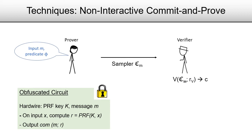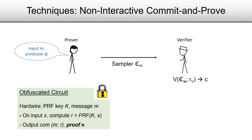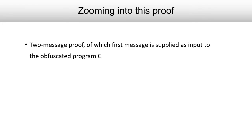In order to hide the message, this circuit is obfuscated via an indistinguishability obfuscation scheme. As such, this satisfies completeness and privacy, but there is no soundness yet, because a malicious prover could send an arbitrary circuit that outputs commitments to arbitrary messages that do not necessarily satisfy the predicate. Therefore, in order to achieve soundness, the circuit will also attach proofs to the prover's commitments. The specific proof we rely on is a two-message proof, of which the first message is supplied as input to the obfuscated program C and the second message is computed by the program itself.